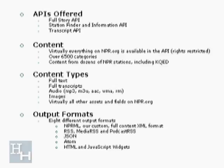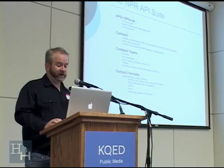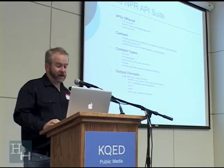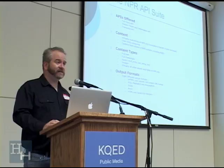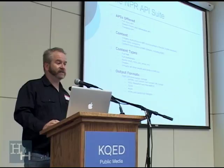The content types include full text, full transcripts, audio, images, and virtually all other assets available. The output formats supported are many, which is really handy. The primary one used by most people is NPRML — NPR's custom XML format that describes their data. But they also support RSS, Media RSS, Podcast RSS, as well as JSON, Atom, and there are HTML and JavaScript widgets, which are probably the easiest way to incorporate the content in your applications and sites.